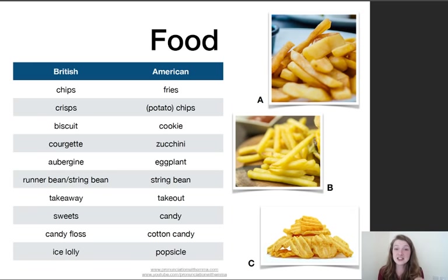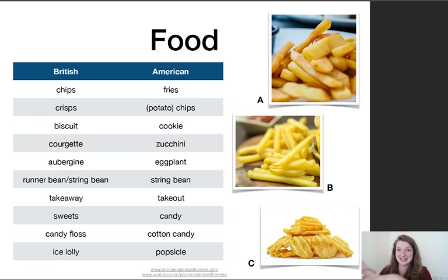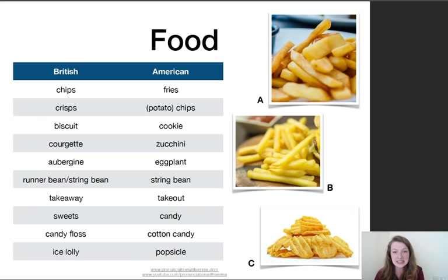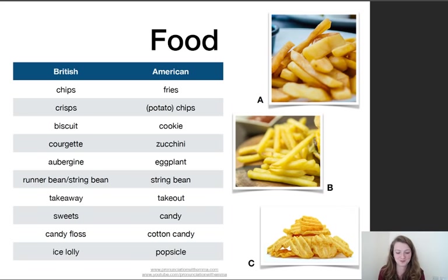Candy floss — if you go to a fun fair with rides and games, you can find stalls where they make this kind of pink, cloudy sweet made of sugar. They put sugar in a machine, it mixes round and round and becomes a big pink cloud. We call this candy floss in British English, but they call it cotton candy in American English. And on a very hot day, you might order an ice lolly — or a popsicle if you're in America.